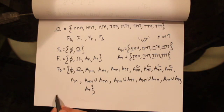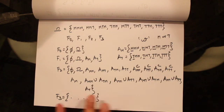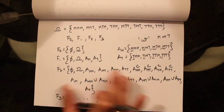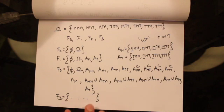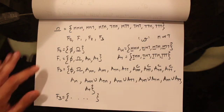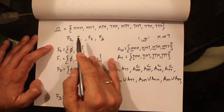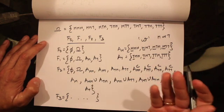Likewise we can write the sigma algebra F3 generated by tossing three coins — it follows the same procedure. F3 captures information available to us after tossing all three coins. This sequence of sigma algebras F0, F1, F2, F3 is called a filtration.